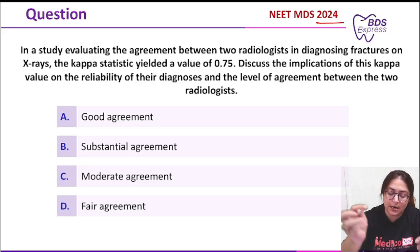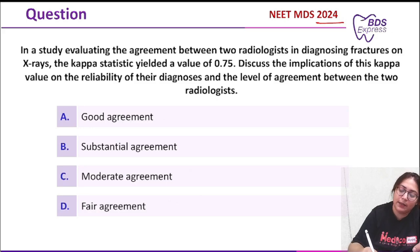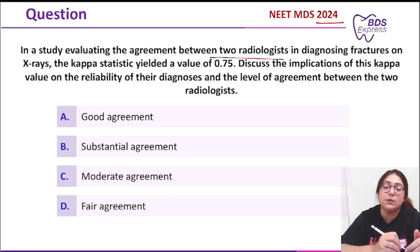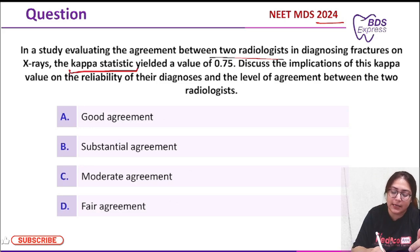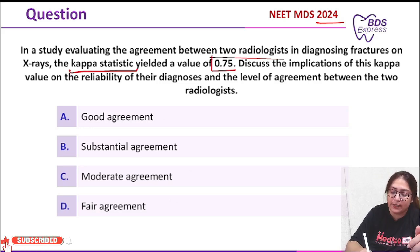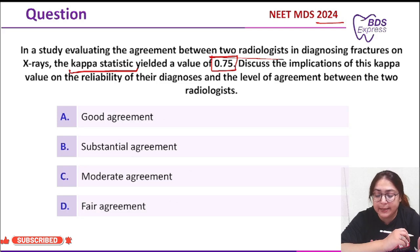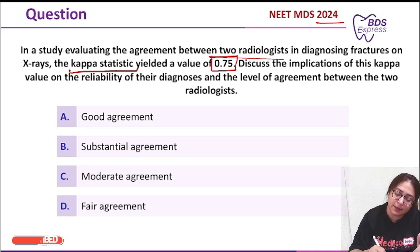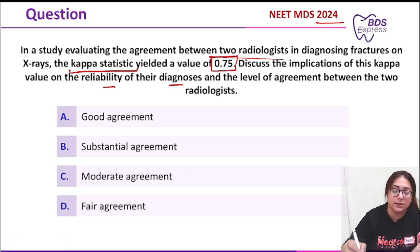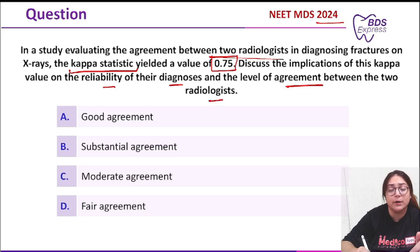The question was: in a study evaluating the agreement between two radiologists in diagnosing fractures on x-ray, the kappa statistic yielded a value of 0.75. Discuss the implication of this kappa value on the reliability of their diagnosis and the level of agreement between the two radiologists.